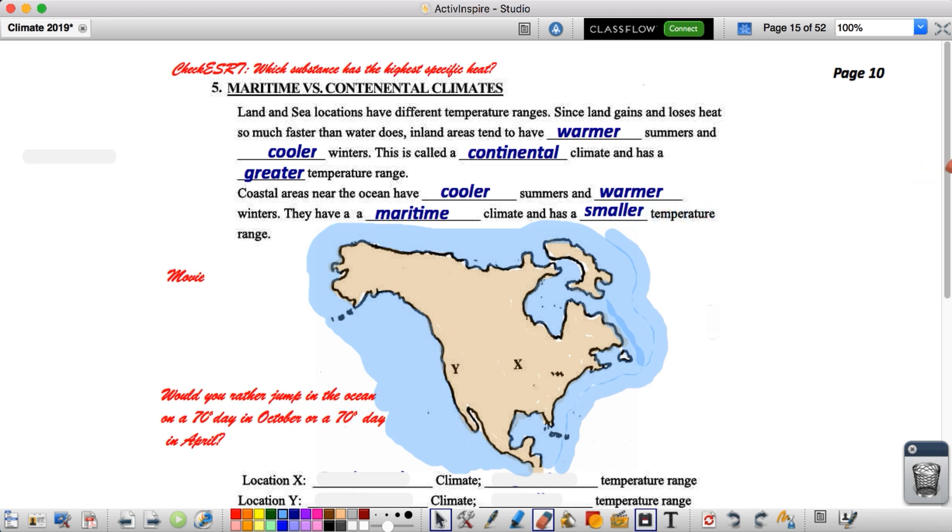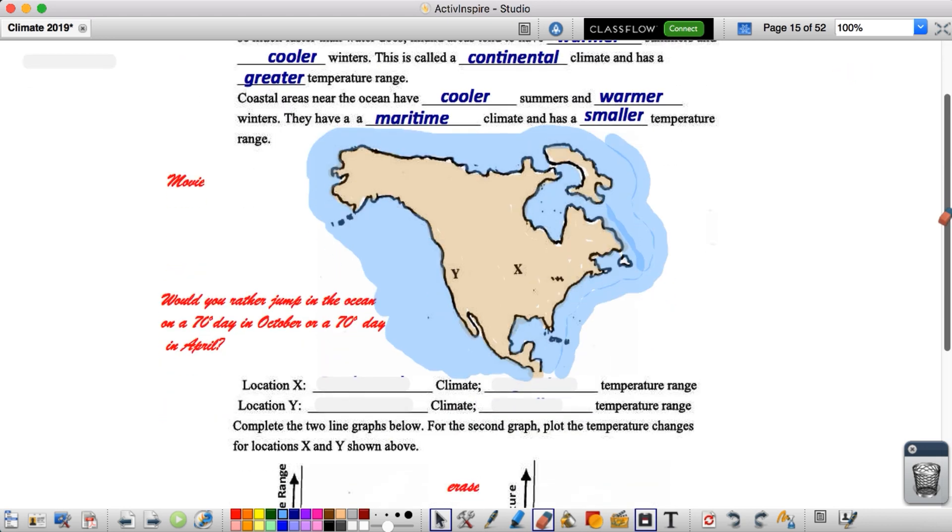Okay, so now, based on what we've just learned, let's take a look at the bottom here. We have location X and we have location Y. Location X is in the center of the continent. Location Y is located by the coast. So let's take a second and classify both of these with these two points down below. Location X has what kind of climate and what kind of temperature range. Location Y, what type of climate and what type of temperature range. Pause the video. Fill those in. This will count.